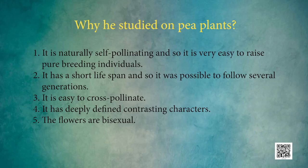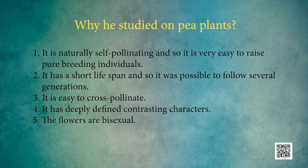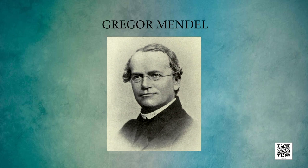As we discussed in the last session, Mendel selected the pea plant for his experiments for several reasons. First, it is naturally self-pollinating, making it easy to raise pure breeding individuals. Second, it has a short life span, so it was possible to follow several generations. Third, it is easy to cross-pollinate. Fourth, it has well-defined contrasting characters. Fifth, the flowers are bisexual, meaning both the female and male parts exist in the same flower. These characteristics of pea plants were helpful for Mendel.